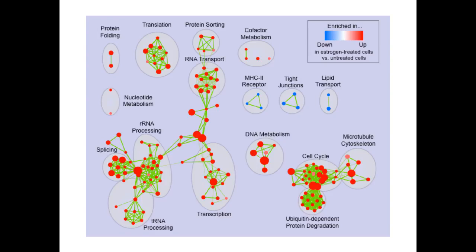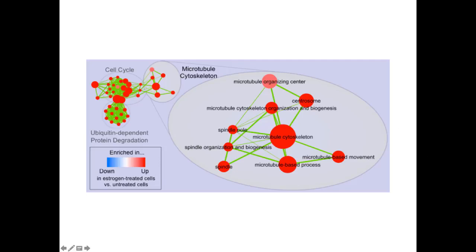If you zoom in on one of these clusters, you can see nodes with different pathway names — microtubule organizing center, centrosome — and these are all related as a sort of cytoskeleton theme. That's the fairly simple idea: it's really just a visualization method meant to help you interpret the results of something like GSEA. The GSEA provides nice reports, and if you're happy with that, you can use that. You usually don't need this method if you only have a few pathways; it tends to be more useful if you have dozens or hundreds of pathways.